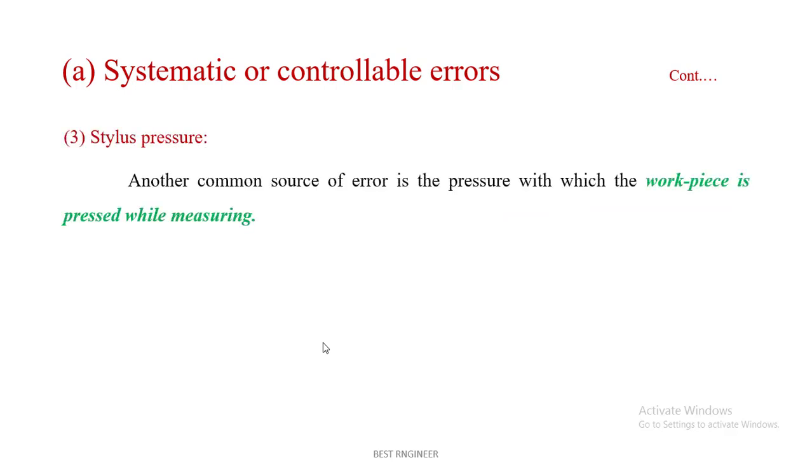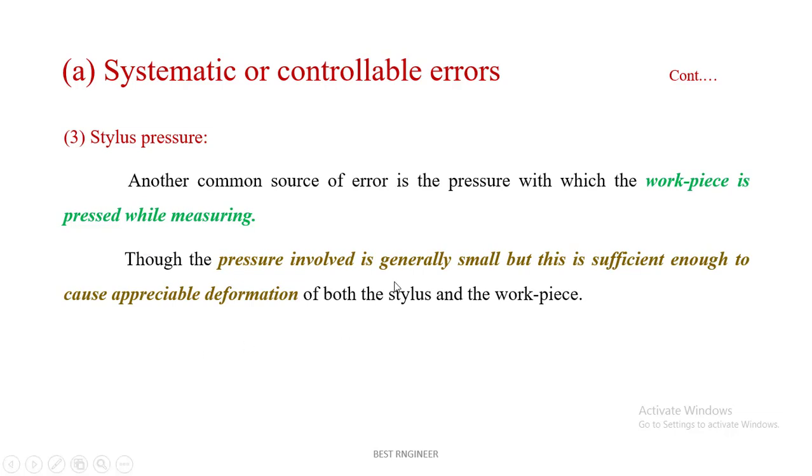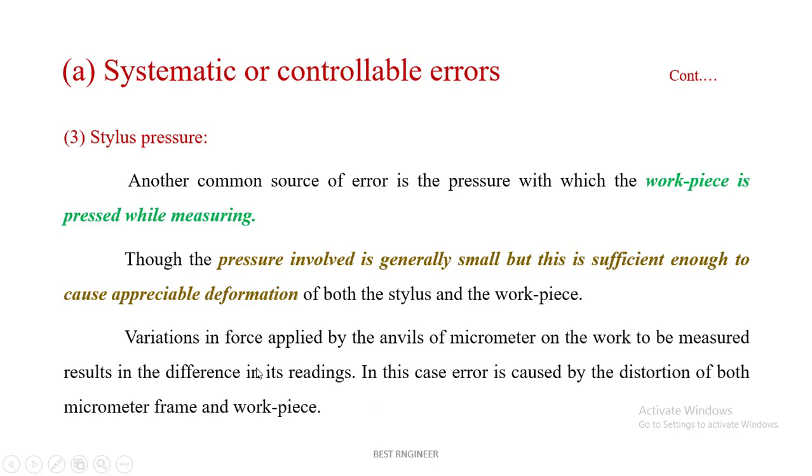Stylus pressure error - another common source of error is the stylus pressure error between the workpiece and pressure while measuring. Though the pressure involved is generally small, this is sufficient enough to cause appreciable deformation of both stylus and workpiece. Variation in force applied by the anvils of the micrometer on the work to be measured results in the difference in its reading. In this case error is caused by the distortion of both micrometer frame and workpiece. For example, suppose we are measuring an object in a micrometer, there is pressure applied on this workpiece. This pressure is called stylus pressure error.